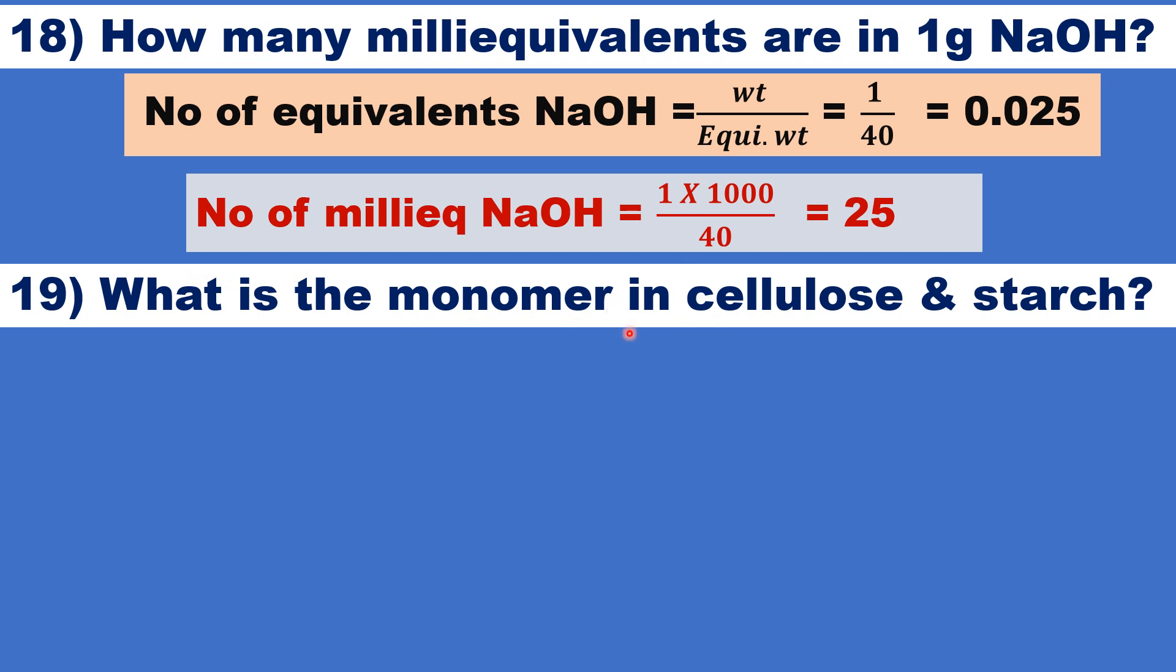What is the monomer present in cellulose and starch polymer? It is nothing but glucose.